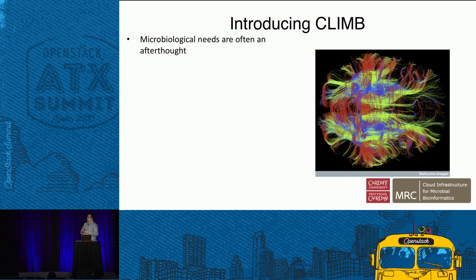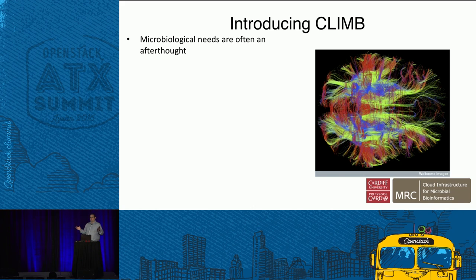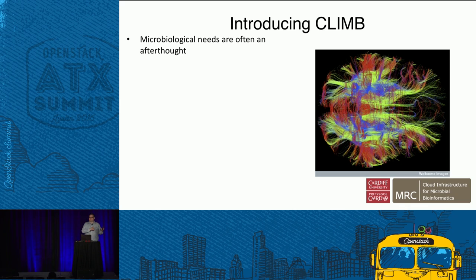Something that really underpinned CLIMB: as microbiologists we often represent a much smaller portion of much larger departments concerned with things like human genetics or human genomics. In the School of Biosciences I think there are about five microbiologists out of 120 academics. Quite often when a system is built for an institute or department, the microbiology needs will be an afterthought — a small portion of the overall haul. Microbiologists quite often don't get a fair slice of the pie on a national level simply because stuff is done locally.